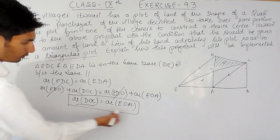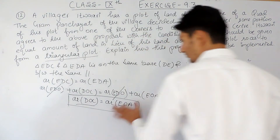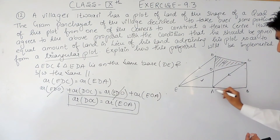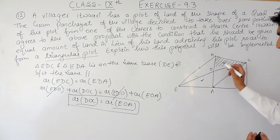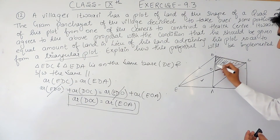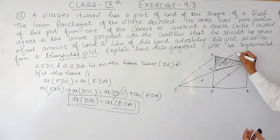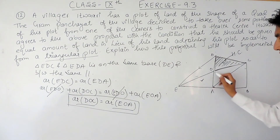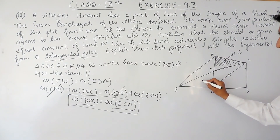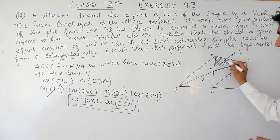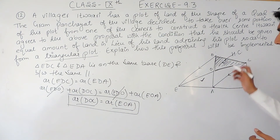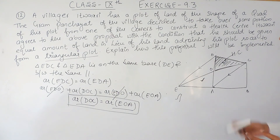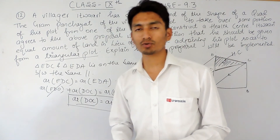So we can say that the areas of both portions are equal — the area of both triangles is the same. This means the complete plot can have a portion given to the Gram Panchayat for constructing a health center, and a piece of land with equal area can be given to this villager in return. This is how the proposal can be implemented.